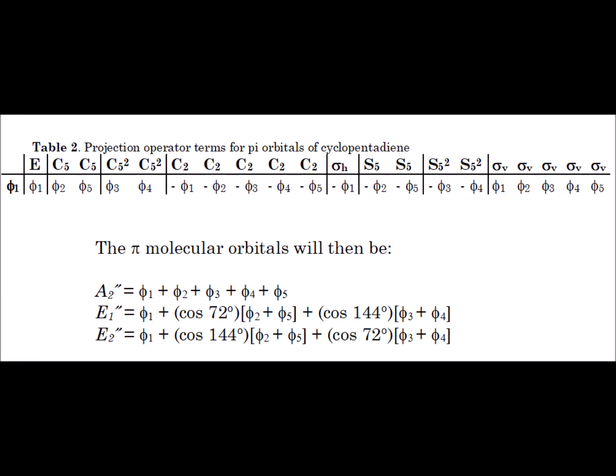Starting with A2 double prime, all the characters in its row of the D5H character table are ones or minus ones. We go character by character, class by class, multiplying the character table value times the Table 2 entry, then take the linear combination. Reducing to lowest terms, we get phi1 plus phi2 plus phi3 plus phi4 plus phi5. We do the same for E1 double prime and E2 double prime, which yield more complicated expressions due to the presence of cosine 72° and cosine 144° in the character table.